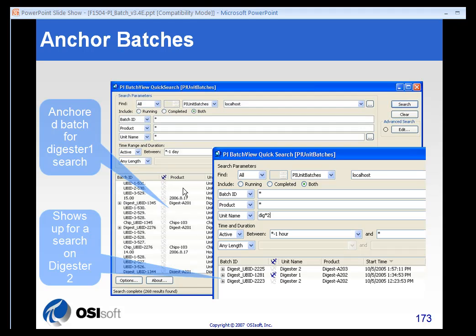One of the nice things about the batch quick search function is that you can anchor batches. There's a column here for anchoring batches. This will anchor that result, and any future searches will include that result even if it doesn't fall into the criteria. So if you have a golden batch or a batch you're comparing other things to, you can anchor it and continue to do other searches and that batch will appear in your future searches. In the example, we've got a batch from unit one, but we anchored that and then searched for unit two and brought up more results, but the unit one still appeared in the search.